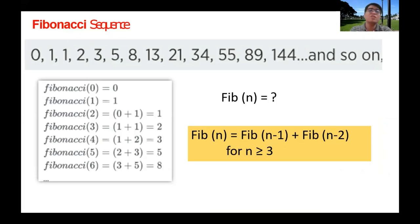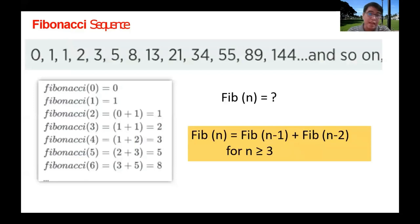The question is: what is Fib sub n, the nth term? Fib n is equal to Fib(n−1) plus Fib(n−2) for n greater than or equal to 3. So Fib 6 is just Fib 5 plus Fib 4, and Fib 4 is just Fib 3 plus Fib 2.